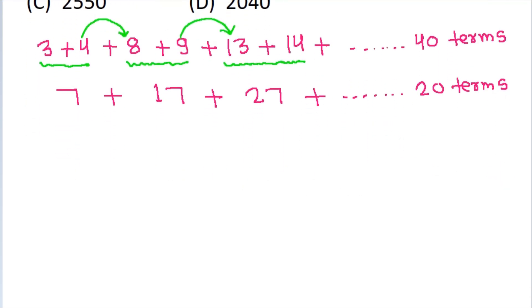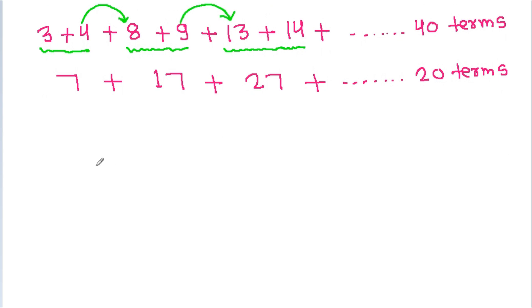If we have a, a plus d, a plus 2d and so on up to n terms, then here we have a is equal to 7 and common difference d is equal to 17 minus 7 is 10.